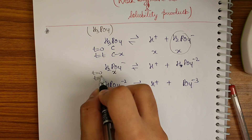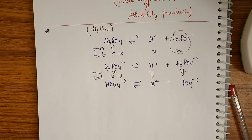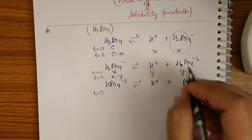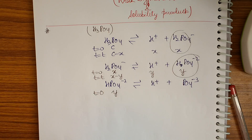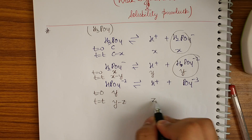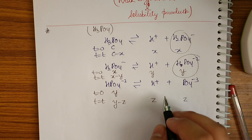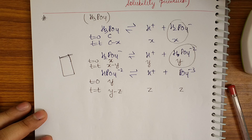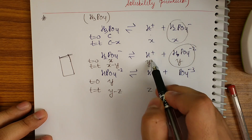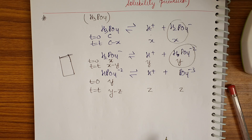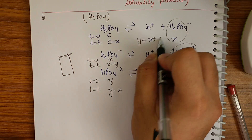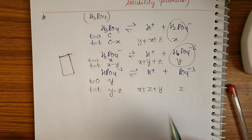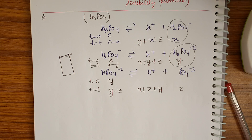First the first step product forms, then it dissociates further. Let the dissociation be y. At t=0, HPO₄²⁻ concentration is y; at time t it becomes y−z, z, z. The key point is that all three reactions happen in the same container, so the H⁺ concentration must be the same throughout — it must be x+y+z for all three equilibria.